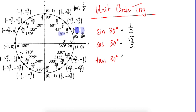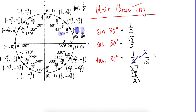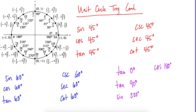Tangent is y over x, or sine over cosine. When we have a fraction over a fraction, we keep the top, change to multiplication, and flip the bottom. After simplifying, the 2s cancel and we're left with 1 over √3. Rationalize the denominator and you get √3/3 as tangent 30.